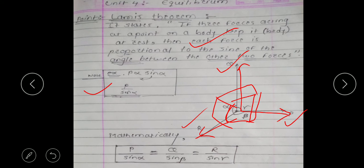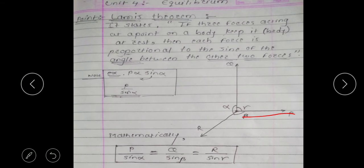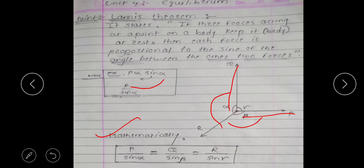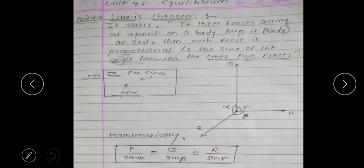For force P, P is proportional to sine of alpha — the opposite angle. Similarly, Q is proportional to sine of beta. Rearranging mathematically gives the equation: P upon sine alpha equals Q upon sine beta equals R upon sine gamma. This is the mathematical expression of Lamy's Theorem.